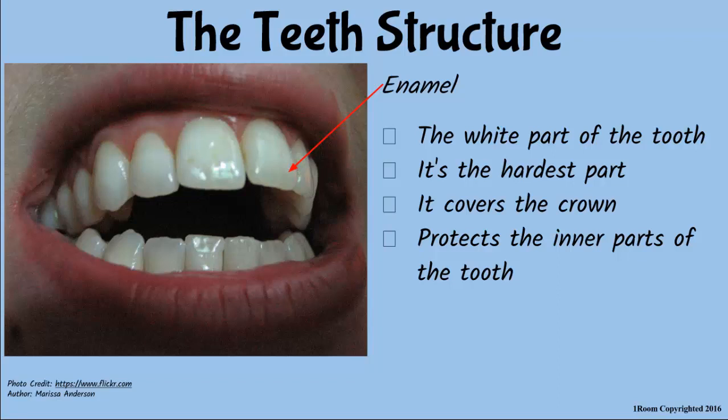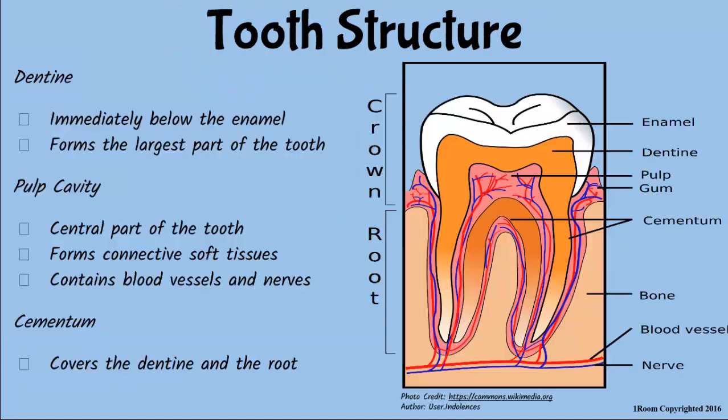Unfortunately, we can't see what is inside unless we break your tooth. Just kidding. Let's take a closer look at this diagram to see the inner parts of the teeth. The layer under the enamel is called the dentine, which forms the bulk of the tooth. The pulp cavity has soft tissues with blood vessels and nerves. Cementum is the bone-like tissue that covers the root, which is attached to the jaw.